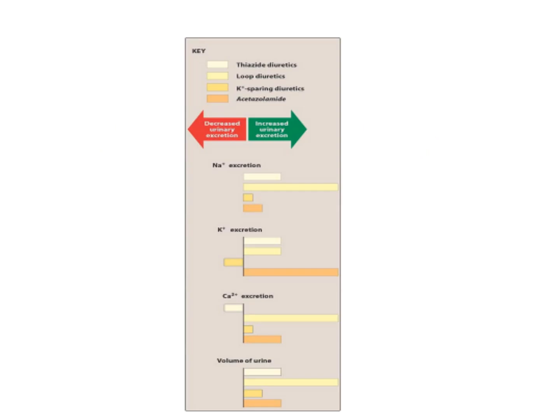Osmotic diuretics are weak diuretics that cannot be reabsorbed. The two main examples are mannitol and urea, indicated for patients with cerebrovascular accidents and acute renal failure by causing expansion of plasma volume. They may cause dehydration but their effect is weak, and they cannot be used for treatment of cardiovascular diseases like hypertension and heart failure. This scheme summarizes the effect of all diuretic groups on urinary electrolyte concentration.